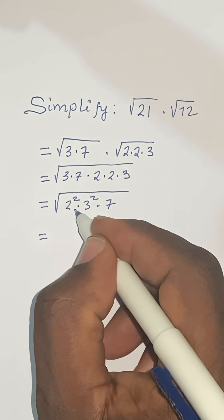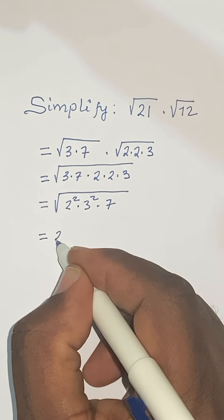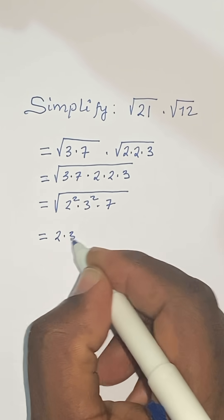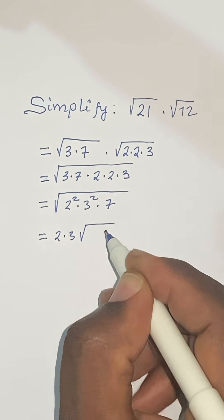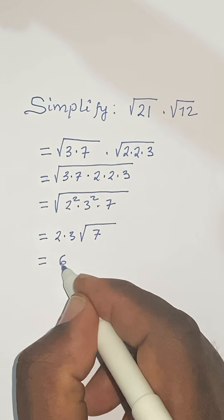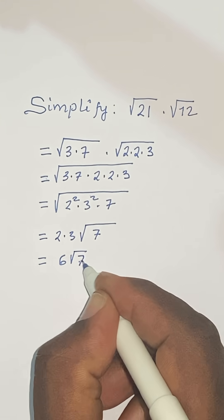And this will be equal to the square root of 2 squared is 2. And the square root of 3 squared is 3. So we have 2 times 3 times the square root of 7. So we have times 7 and this is equal to 6 root 7.